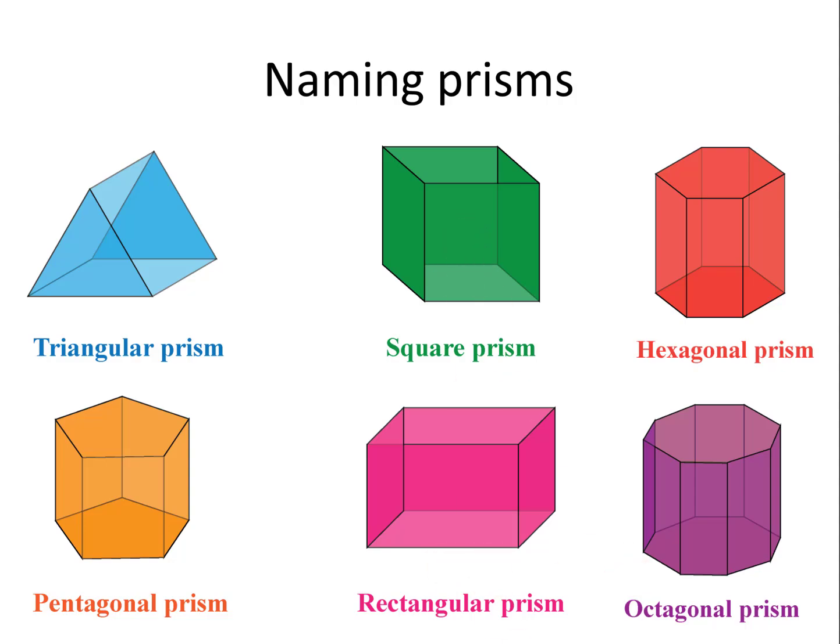Square prisms are called cubes and rectangular prisms are known as cuboids and those are the names that should be used for these two shapes.